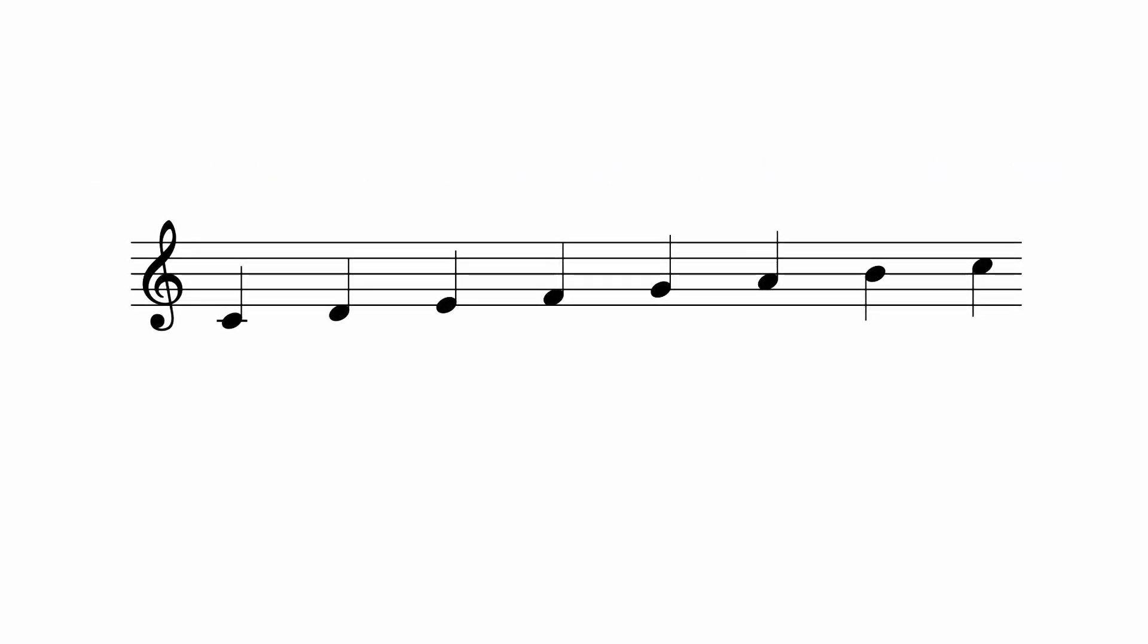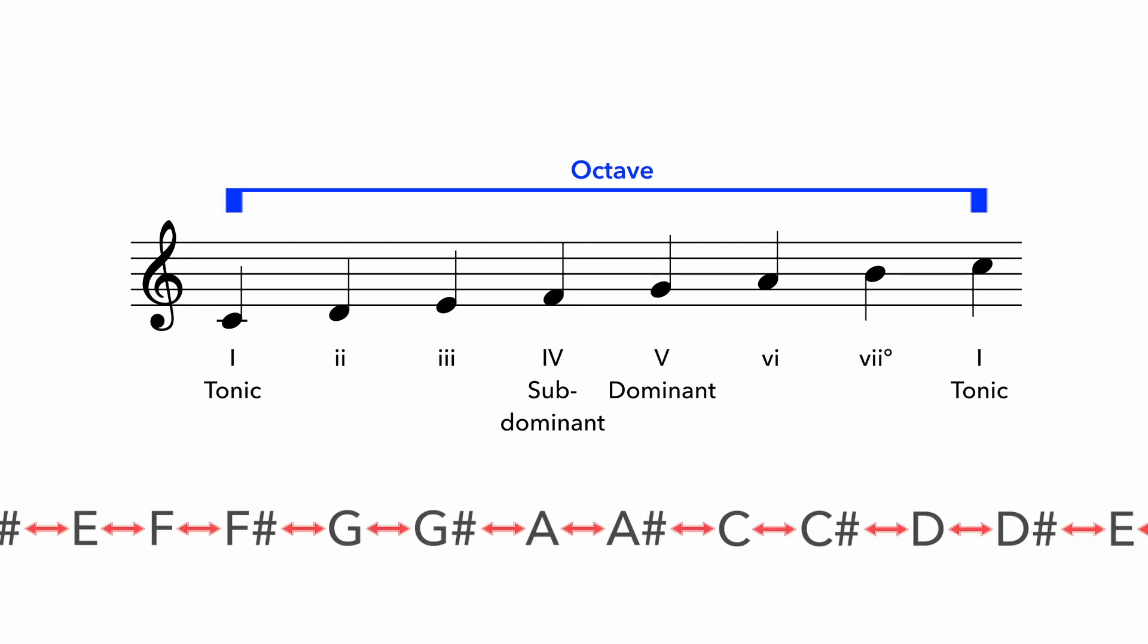So, while all 12 notes have their time to shine, a 7-note scale provides orientation, a harmonic foundation, a hierarchy between notes, and most importantly, a tonal center, in a way that a 12-tone chromatic scale never could.